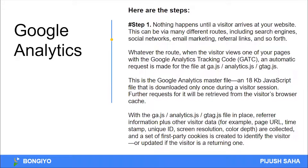When the visitor views one of your pages with the Google Analytics tracking code, an automatic request is made for the file at ga.js, or analytics.js, or gtag.js. There was a classic version, an analytics version — analytics.js, universal analytics.js. There are a lot of features. This is the Google Analytics master file, an 18kb JavaScript file.